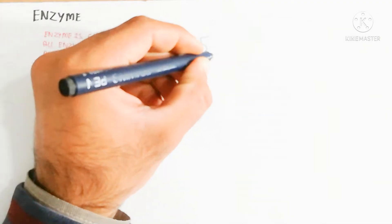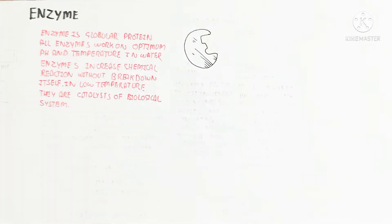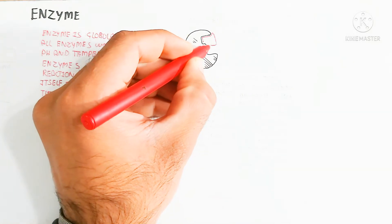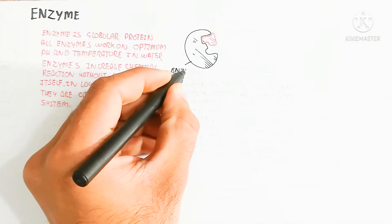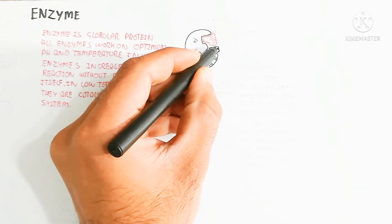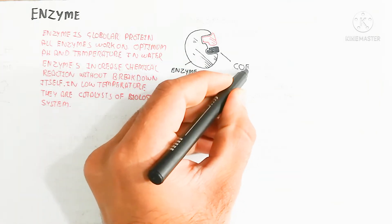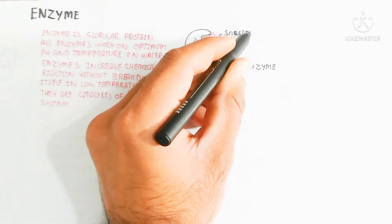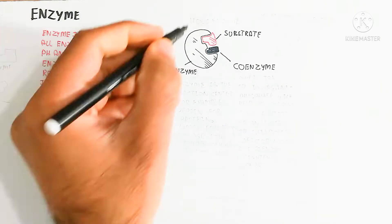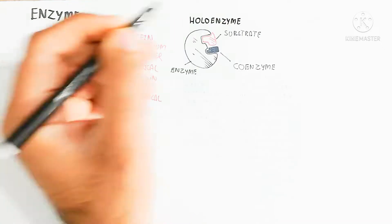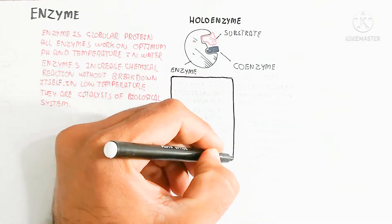We will discuss holoenzyme and apoenzyme. A holoenzyme contains a coenzyme and a cofactor — this combination of the two components is known as the holoenzyme. When the substrate is triggered, it allows digestion and breakdown of larger molecules into smaller ones, or building smaller into larger.